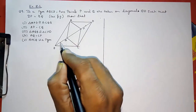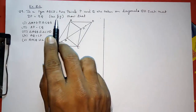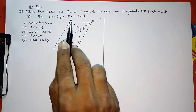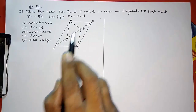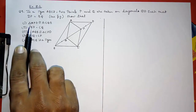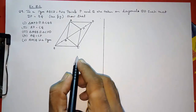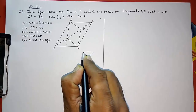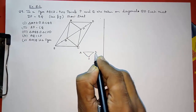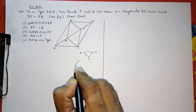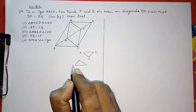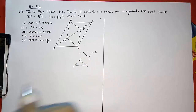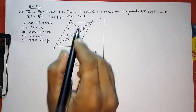They say show that triangle APD is congruent to triangle CQB. First we have to show that, so I am going to make rough triangles here so that you can understand properly. This is APD and this is BQC — they say these two triangles are congruent.